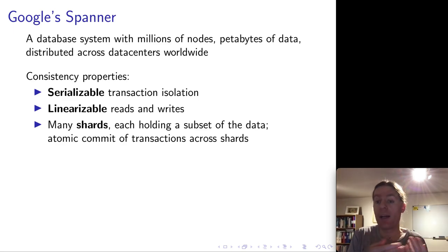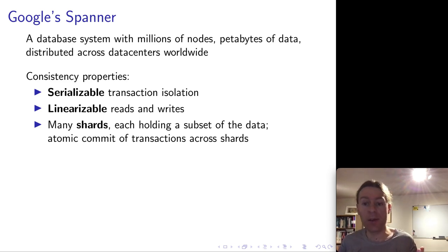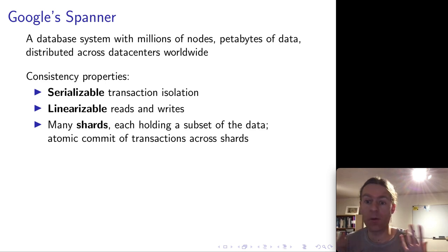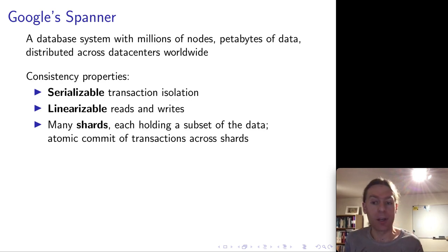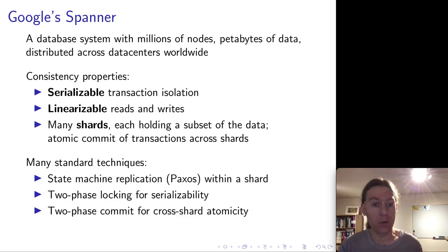This now means that you might have a transaction that needs to read and write data on multiple nodes. If this happens — a distributed transaction like this — we need atomic commit, so that any changes made by a transaction will either be committed on all of the nodes or aborted on all of the nodes. So all of these classic properties we want. And a lot of the techniques that Spanner uses to implement these properties are equally classic standard algorithms.